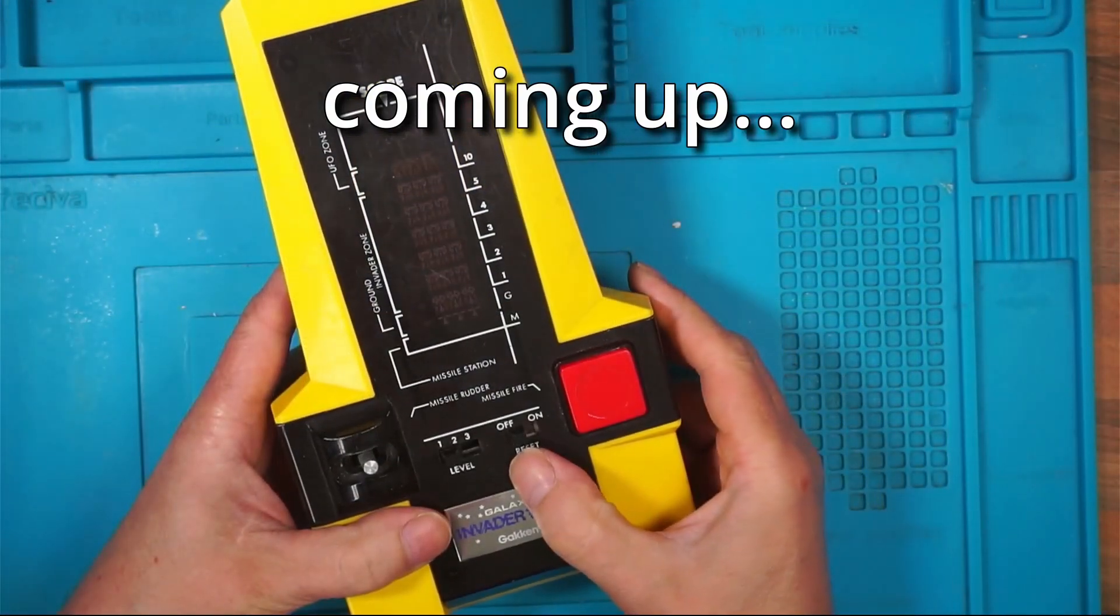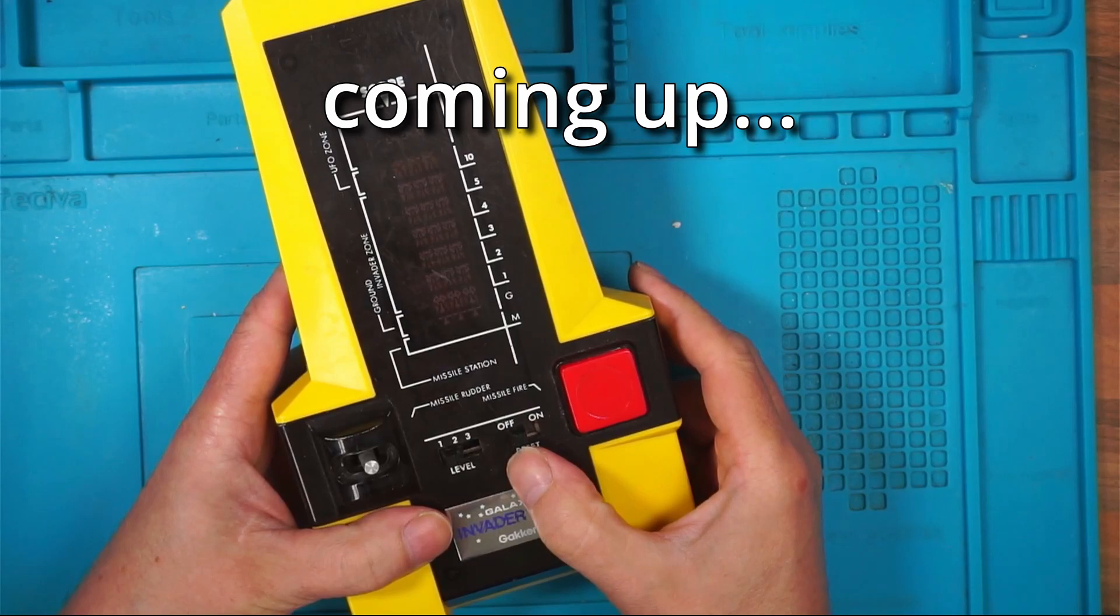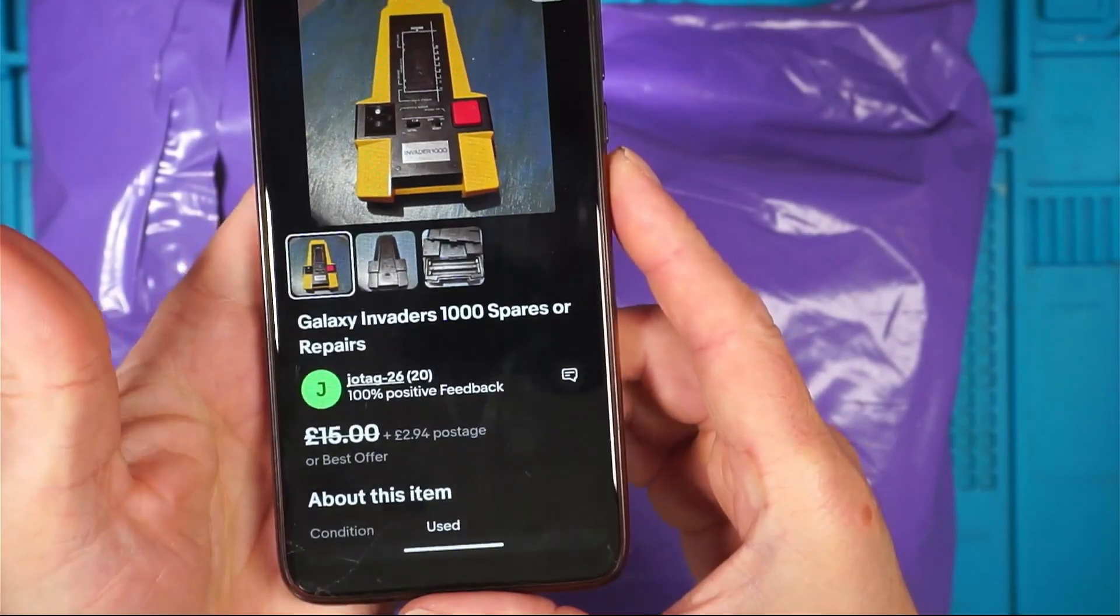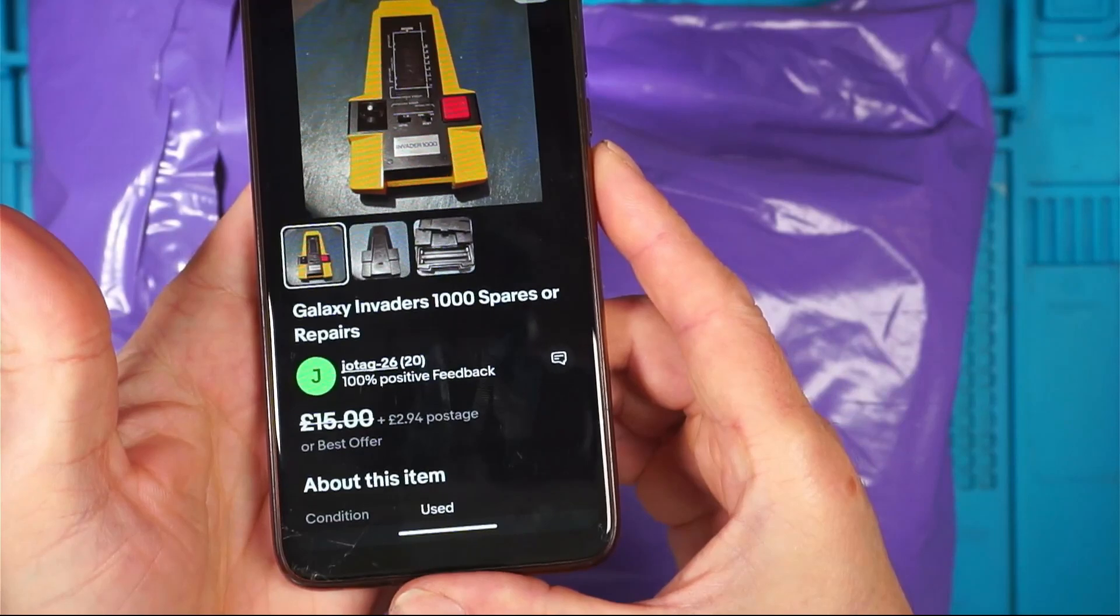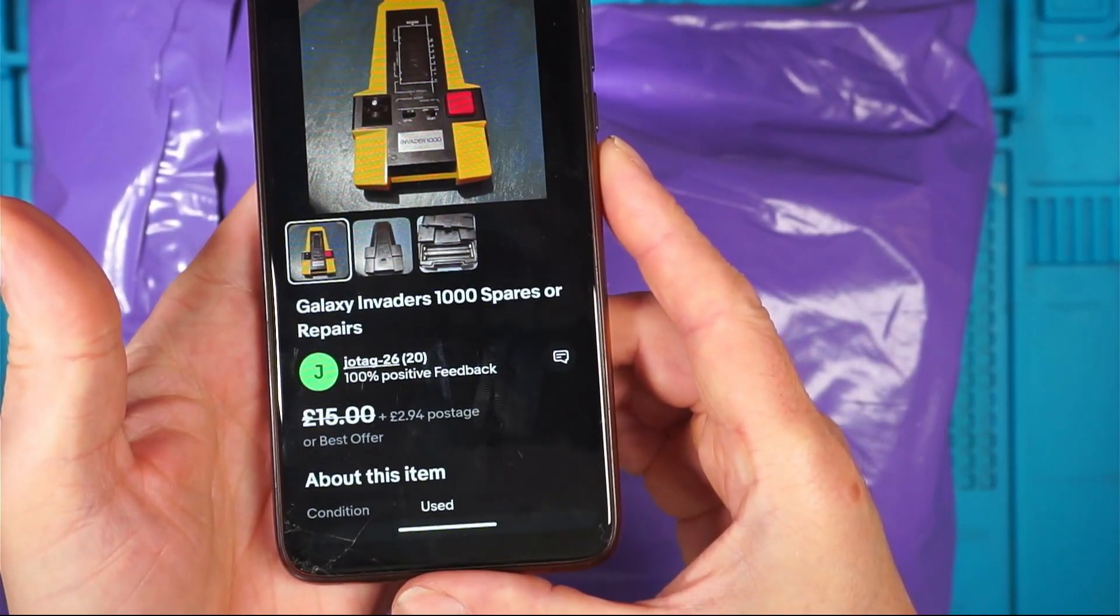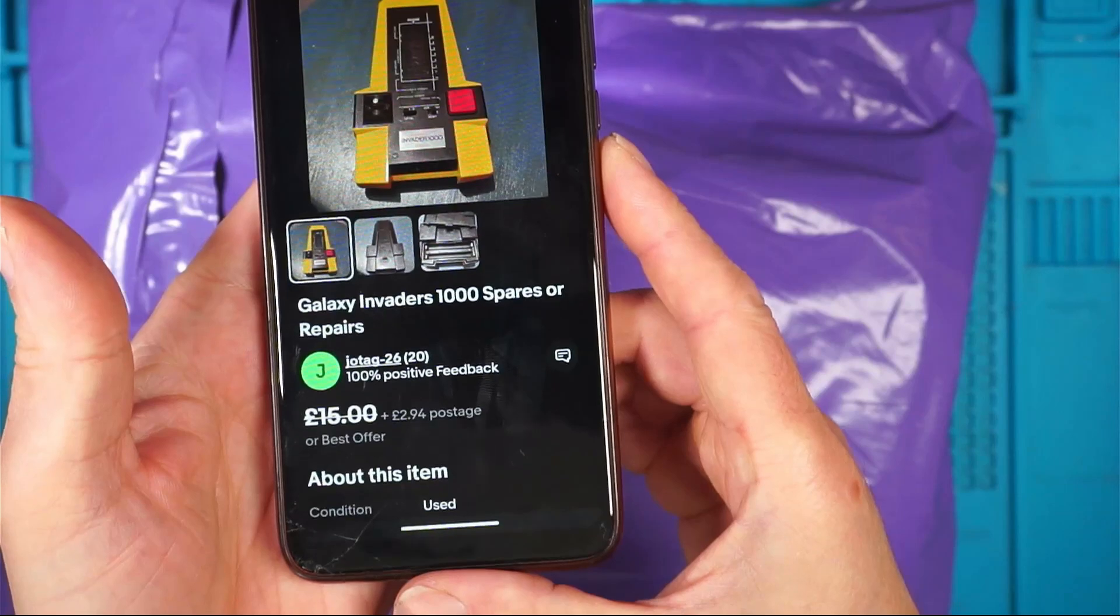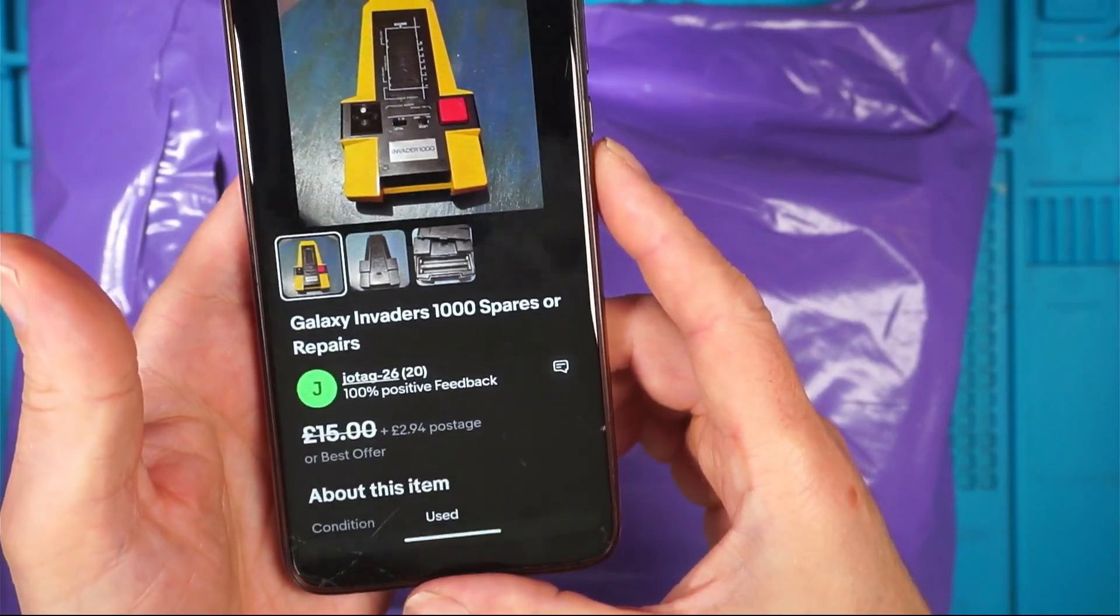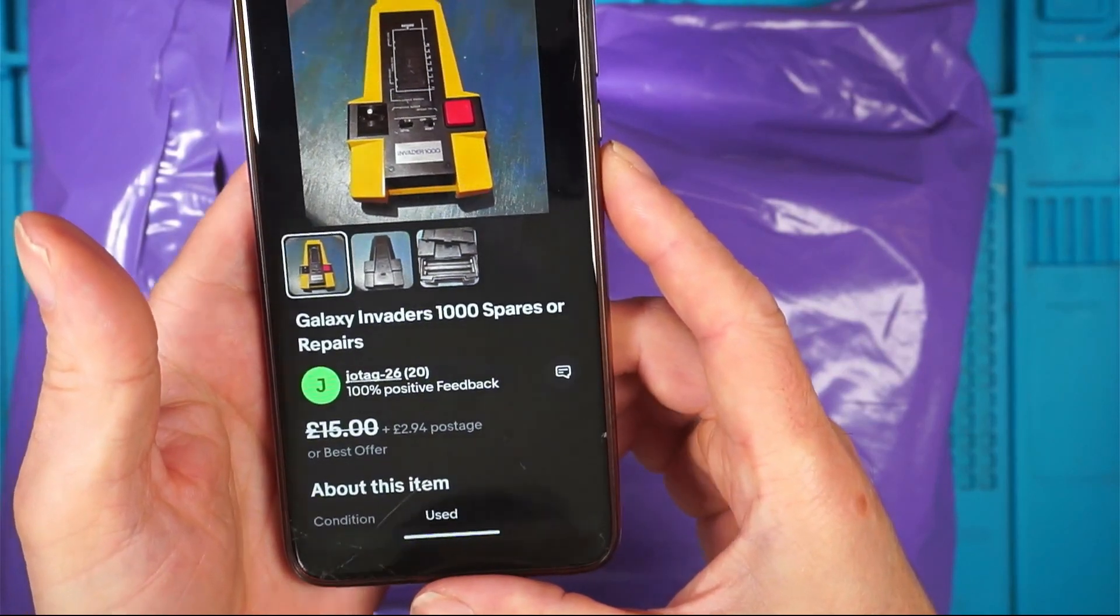Okay, right, first switch on. Is it going to work? The seller had it up for £15 plus £2.94 postage. They accepted my offer of £12 plus £2.94, bringing a total just shy of £15.